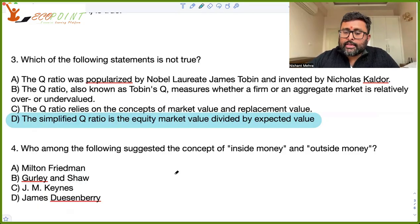Who among the following suggested the concept of inside money and outside money? So this was suggested by Gurley and Shaw. They have written a book, Money in Theory of Finance. So there they have introduced this concept and inside money is the money which is created in the private sector. For example, bank loans or deposits, while outside money is the currency which is issued by central bank or government, right? That is outside money.